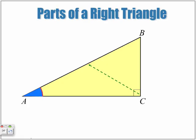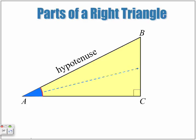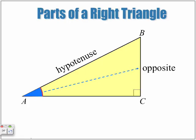Opposite to the 90-degree angle is what we call the hypotenuse. So if we're looking at angle A here, this is the angle that we've labeled. If we look to the other side, that's called the opposite side — it's opposite to whatever angle is our angle of question. The hypotenuse never changes; it is always opposite to whatever the 90-degree marker is.